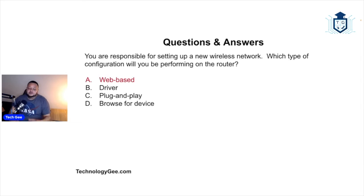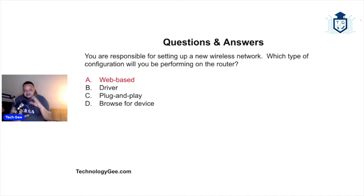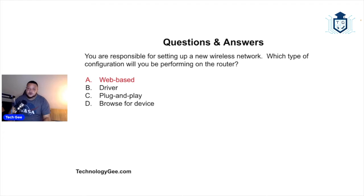The answer is web-based configuration. Basically, when you get your wireless router and set it up, it will ask you to type in an IP address like 192.168.1.something, which takes you to a web page where you log in. Once logged in, you can make configuration changes — changing the SSID, changing the password, and all types of settings — all through a web-based interface.